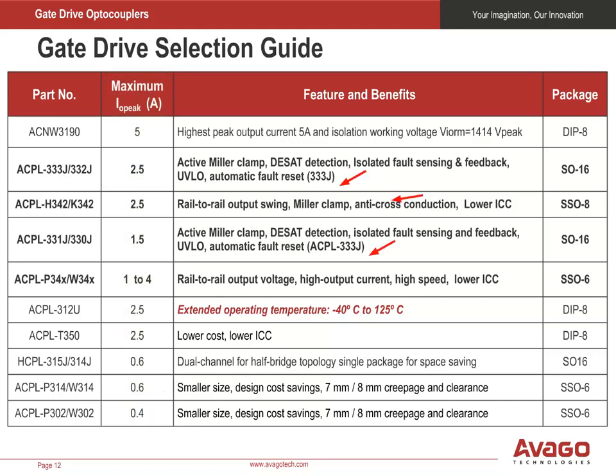Now ask yourself whether the gate driver has the protection features you need, such as a Miller clamp, overcurrent or short-circuit protection, a fault feedback signal, device reset, and others. Eliminate the drivers that do not have the needed features. Next, look at the operating temperature range—for example, do you need automotive grade or a higher operating temperature device? Finally, consider what is the maximum DC bus voltage in your design. If the DC bus voltage can go beyond 1200 volts, the gate driver should be available in a wider package, such as the wide-body packaged ACNW devices from Avago.